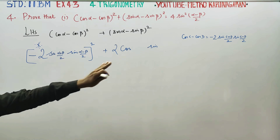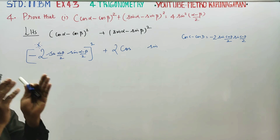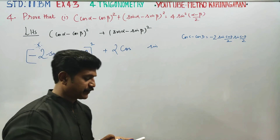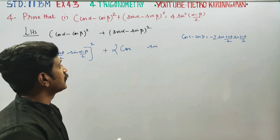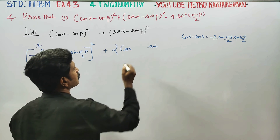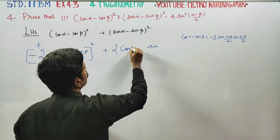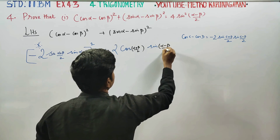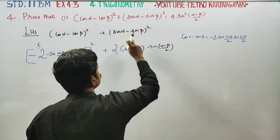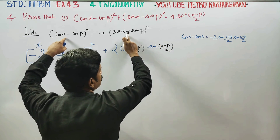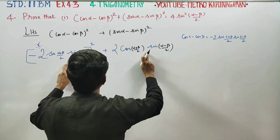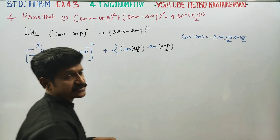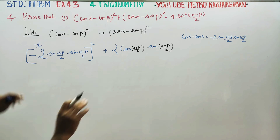We use this formula — simple logic, formula use. It is important to check: alpha plus beta by 2, alpha minus beta by 2. One concept is addition, subtraction, multiplication — product. Product reverse to addition subtraction — that is the idea here.